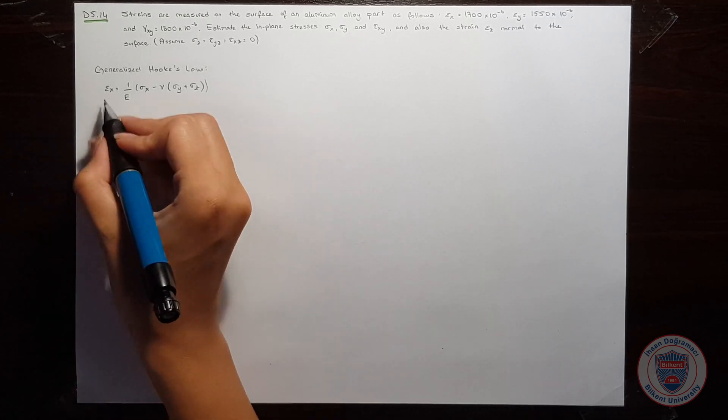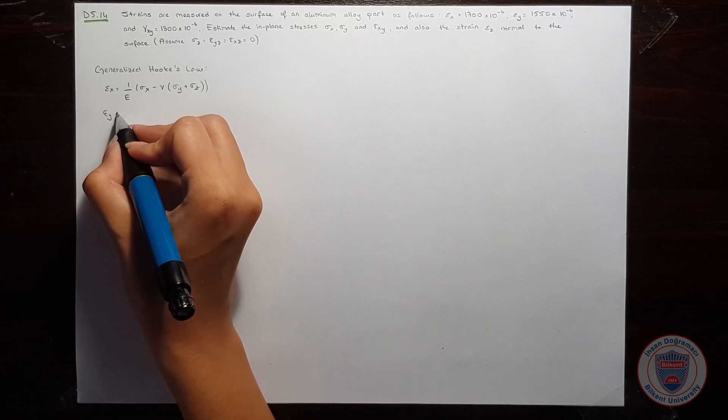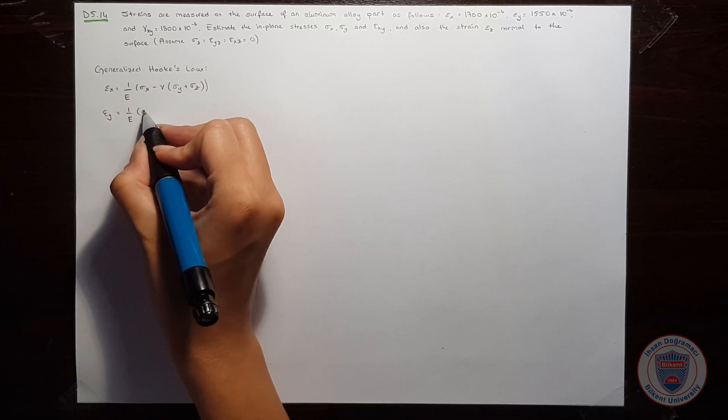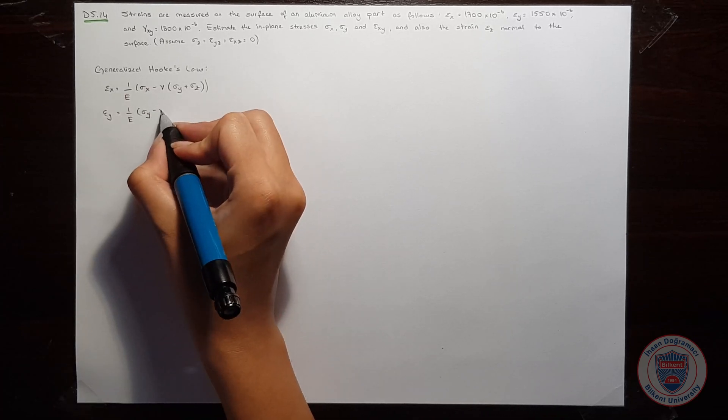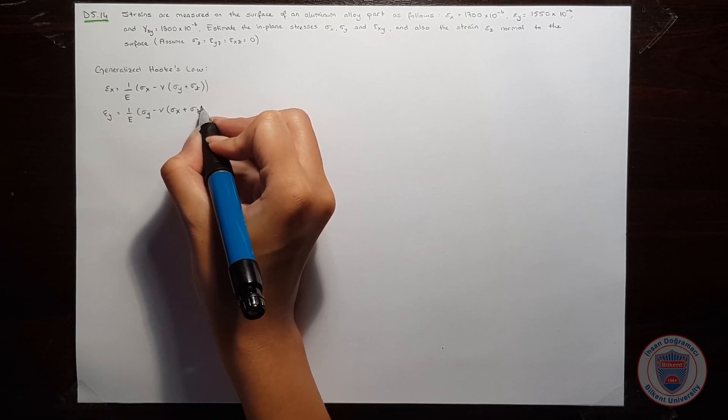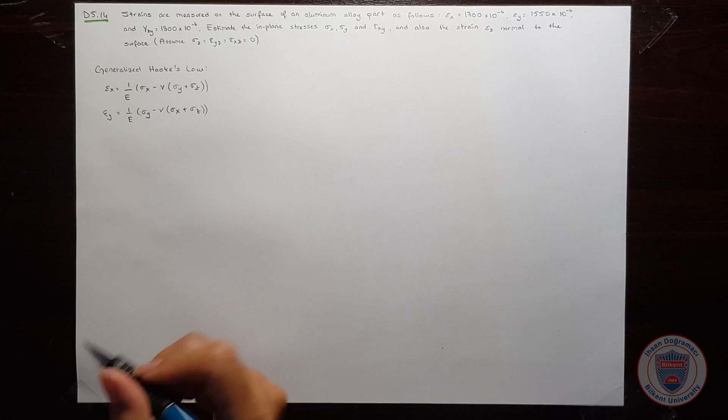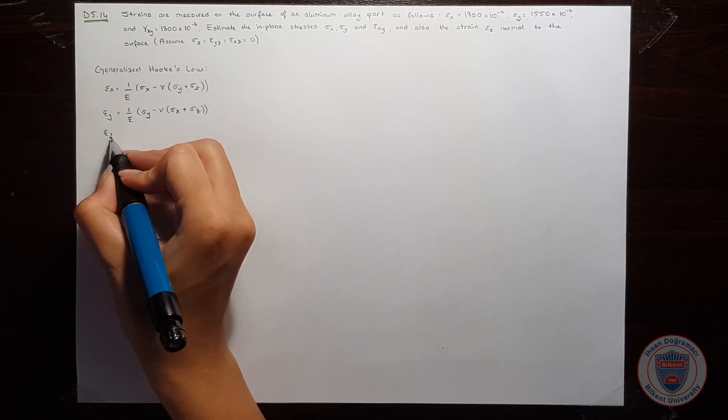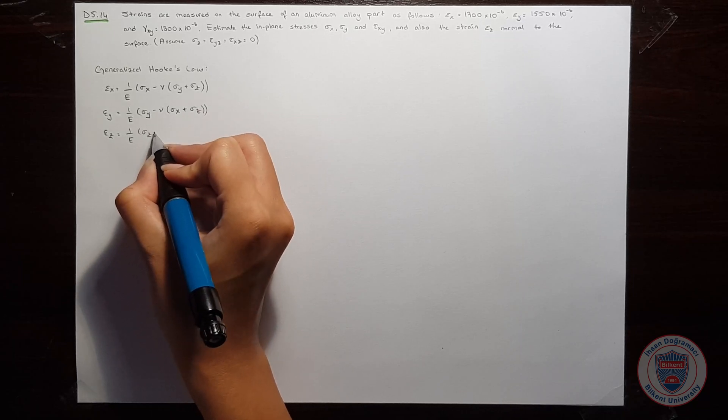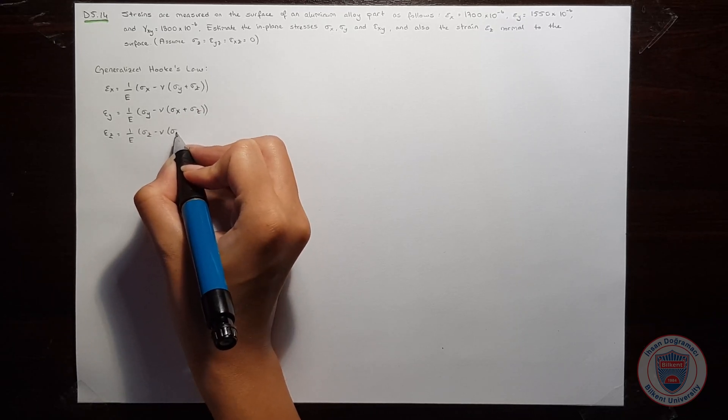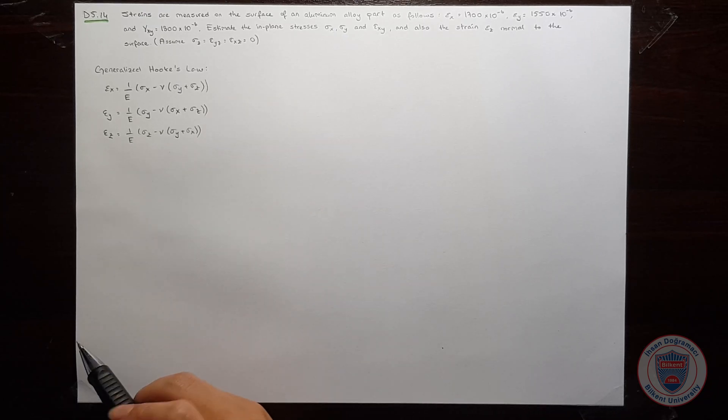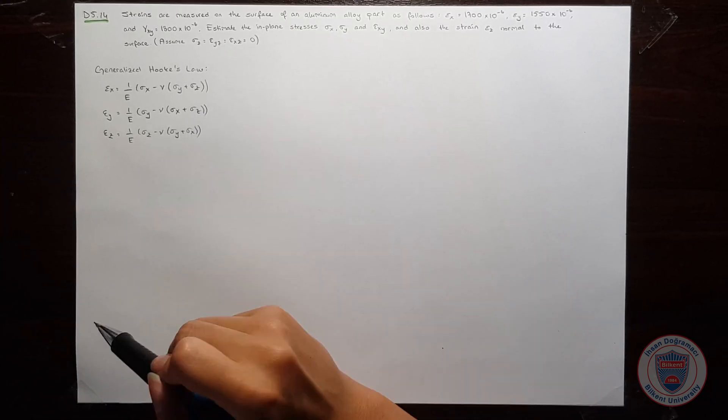And similarly, epsilon y is equal to, again, 1 over e times sigma y minus Poisson's ratio times sigma x plus sigma z.